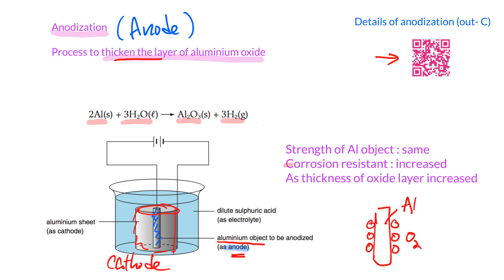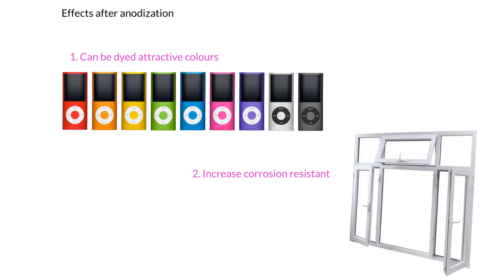After anodization, the corrosion resistance of the aluminium increases because the thickness of the oxide layer increases — the thicker the oxide layer, the higher the corrosion resistance. One important thing to note is that the strength of the aluminium object remains the same; the aluminium object does not become harder or stronger. Anodization only increases the oxide layer thickness.